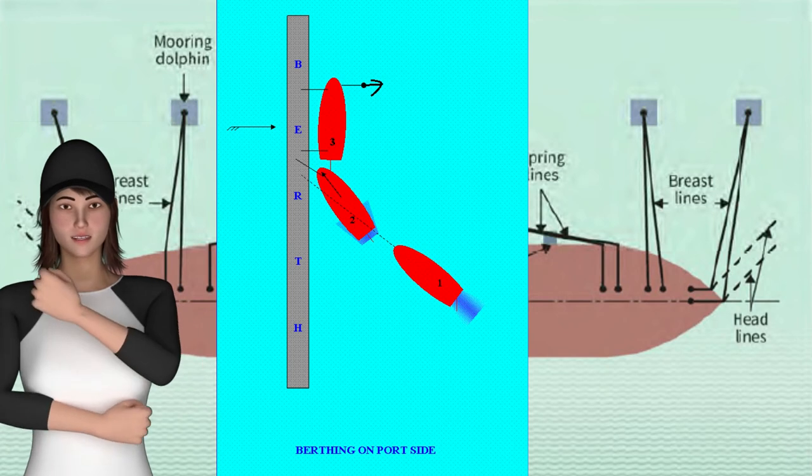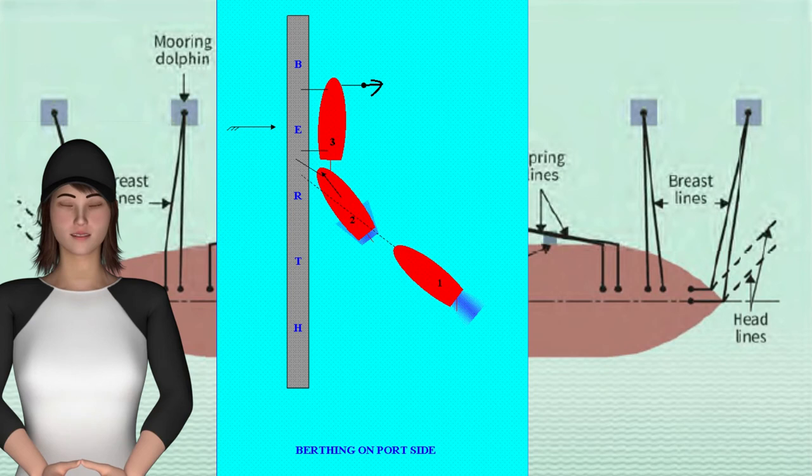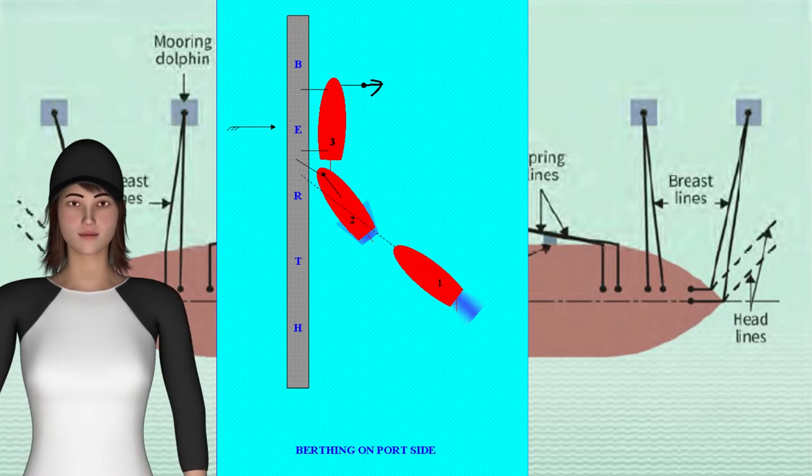Lines are heaved when the vessel is parallel to berth. An offshore anchor may be used. It is let go when the ship has bodily drifted from the berth.